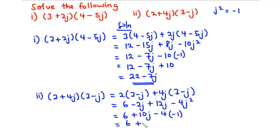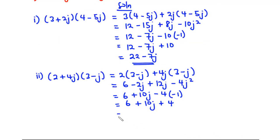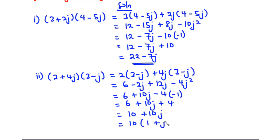We have 6 + 10j, and -4 times -1 is 4. So 6 plus 4 is 10, giving us 10 + 10j. At this point we can factor out 10, so that becomes 10(1 + j).